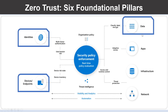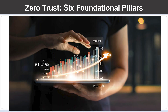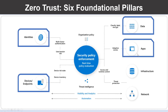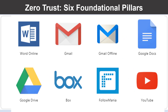Let us understand data. Data should be classified, labeled and encrypted based on its attributes. Security efforts are ultimately about protecting data and ensuring it remains safe when it leaves devices, applications, infrastructure and networks that the organization controls. Applications are the way that data is consumed. This includes discovering all applications being used — sometimes called shadow IT — because not all applications are managed centrally. This pillar also includes managing permissions and access.